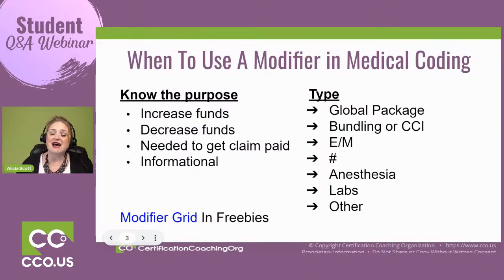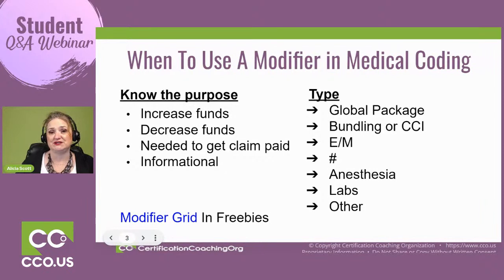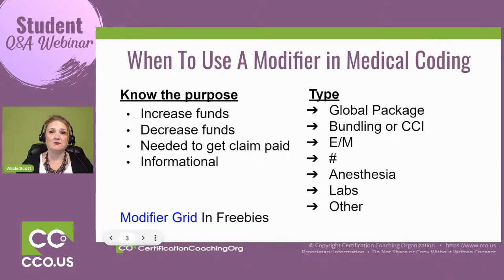There are also bundling or CCI edits — that's for wanting to break out something that was bundled together or bundle something together. Some modifiers can only be appended to evaluation and management codes. Some deal with numbers — for example, you had one surgery but needed two surgeons to do the procedure, and the modifier explains that. There are some modifiers only used for anesthesia, and the same for labs. And then there's always something we call 'other,' usually defined by the code set, where we have specificity but there's just not a specific code to describe it.